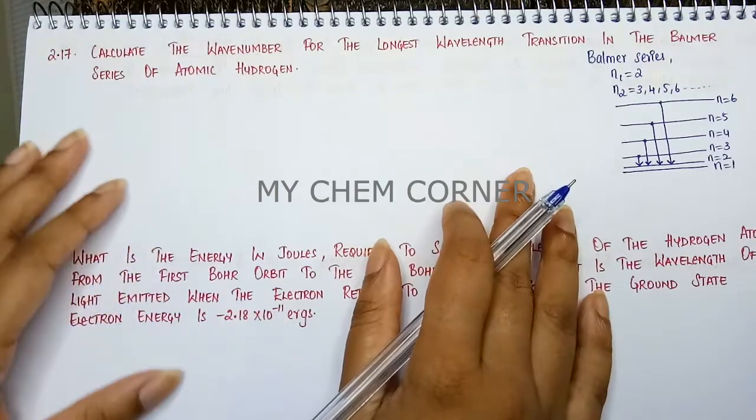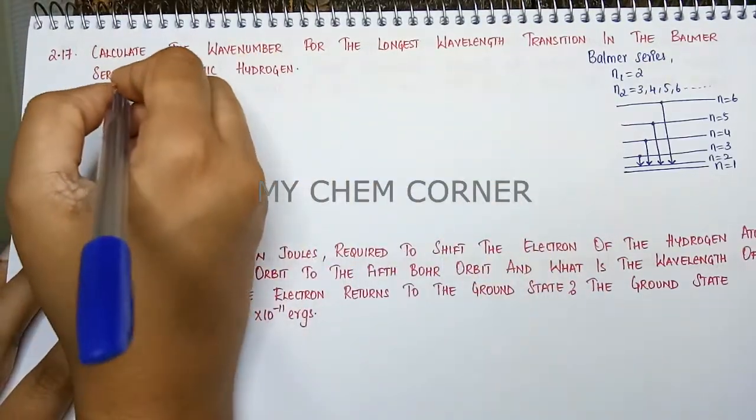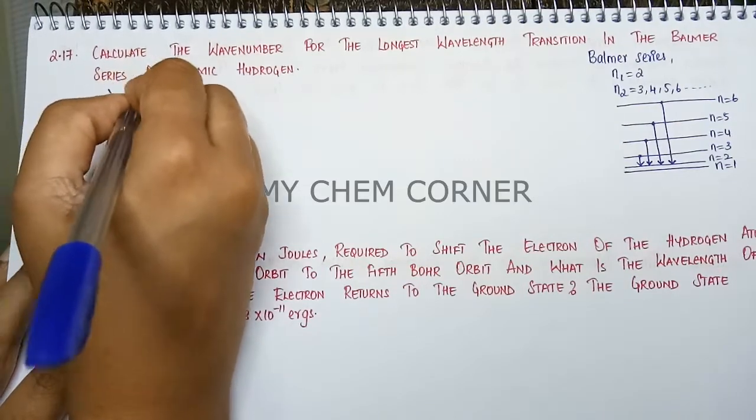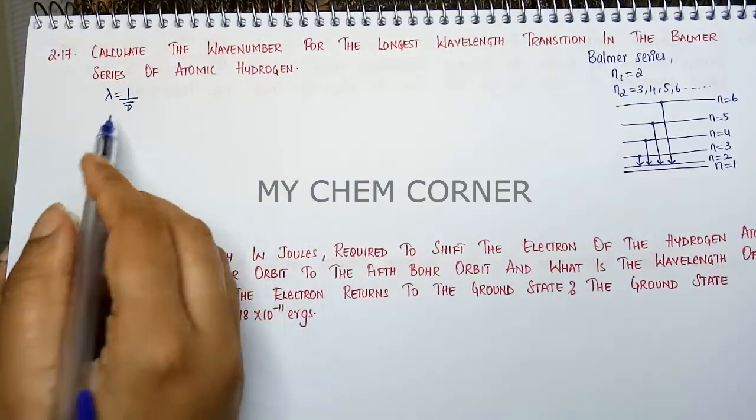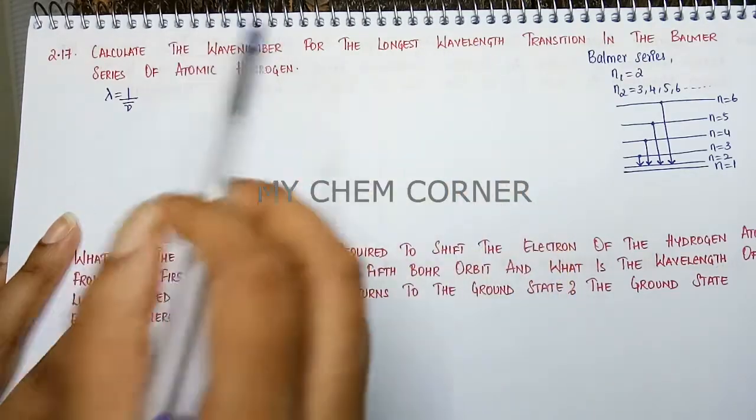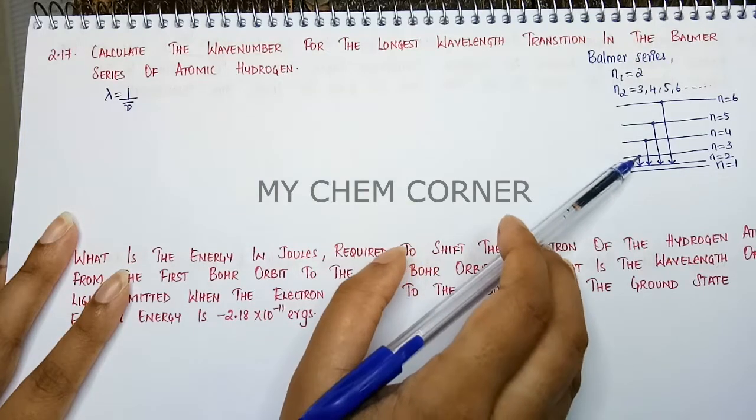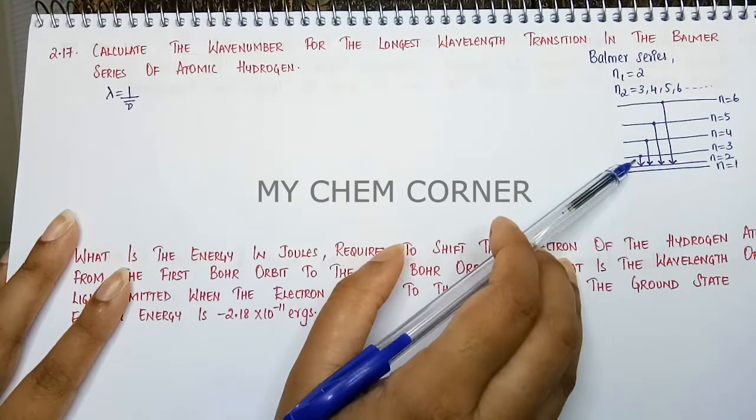So now we need to show a relation between wave number and wavelength. So we have lambda equals 1 by nu bar. When they say you need to find for the longest wavelength, we need to see for the shorter number of waves. The shortest number of wave is where N equals 3 to N equals 2. That is the shortest one.